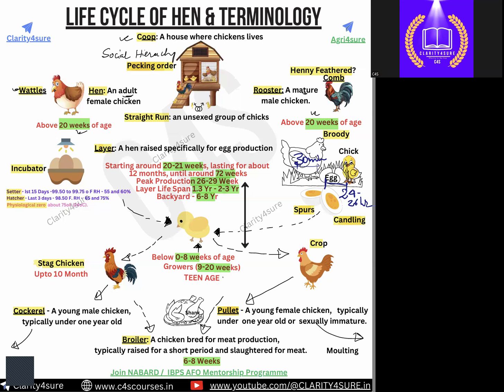Another physical appearance term is henny feather. Henny feather means when the male bird — that is the rooster — develops feathers that are similar to those of the female bird. The feathers of the female bird and male bird are different, but if the male bird has feathers similar to the female bird, we call it henny feather.